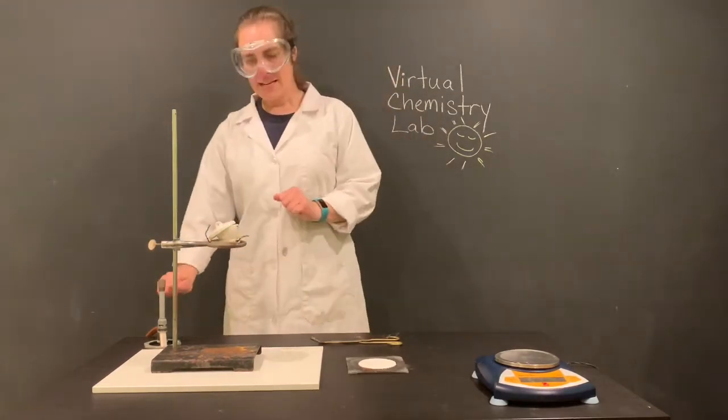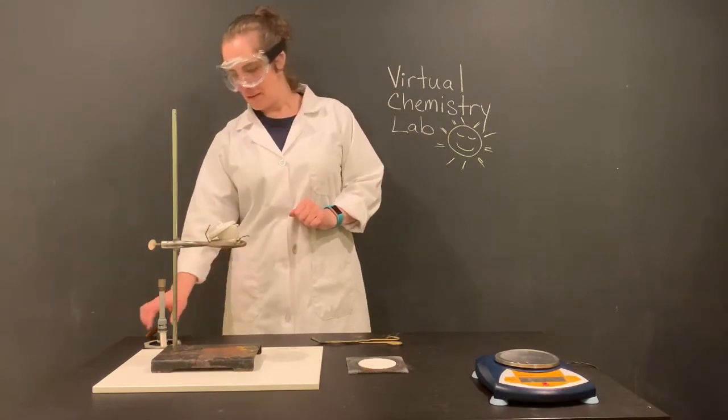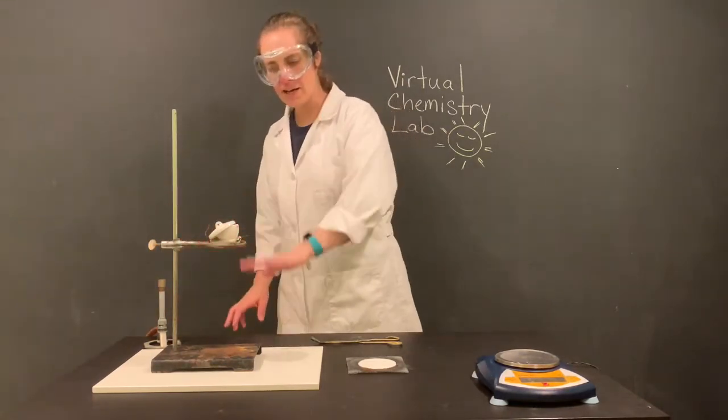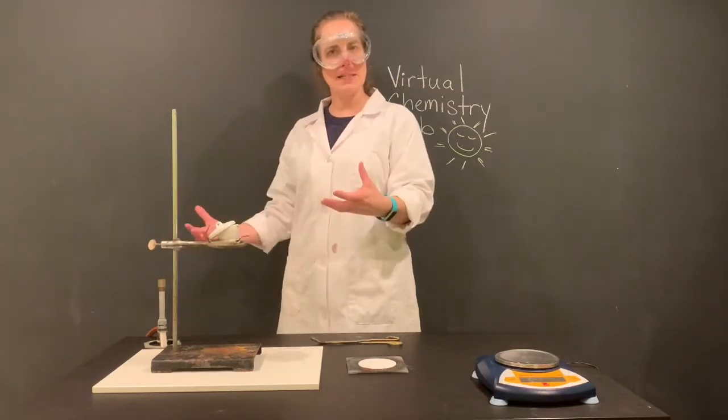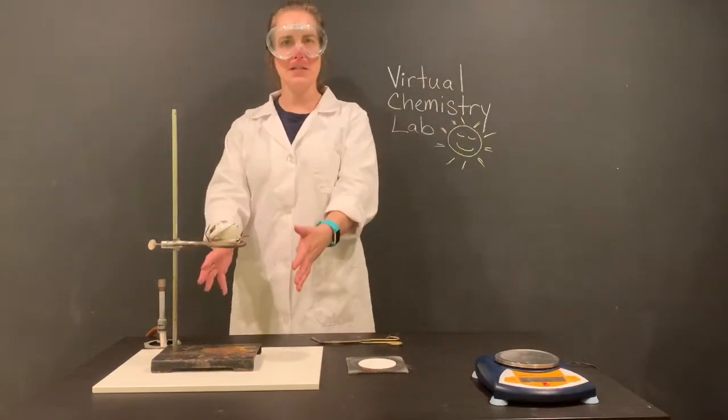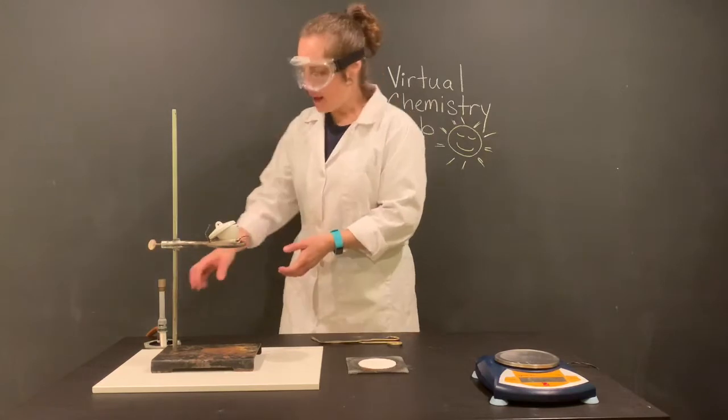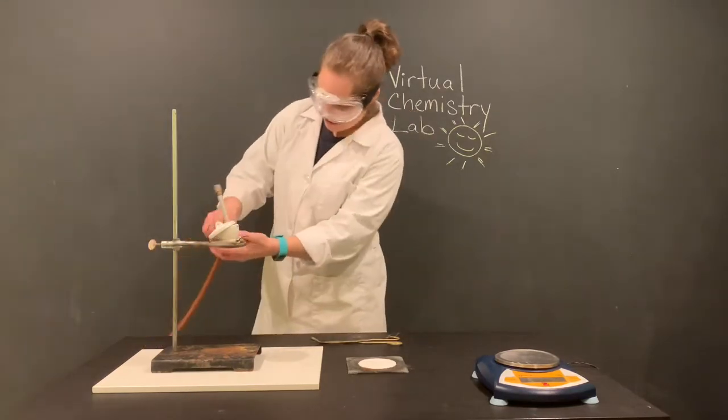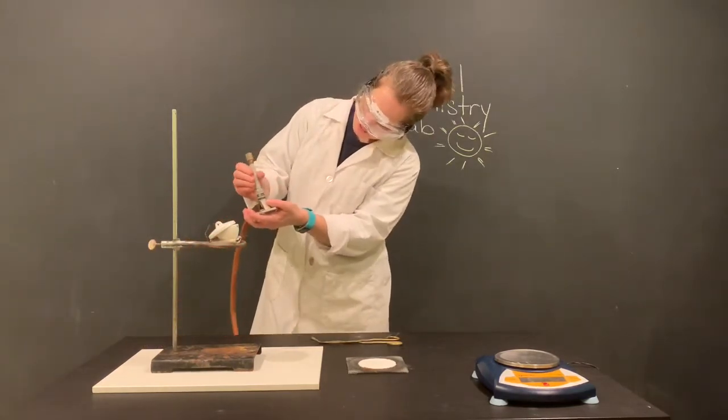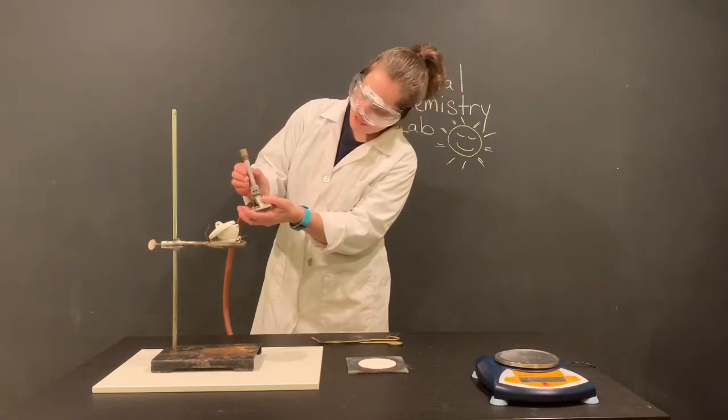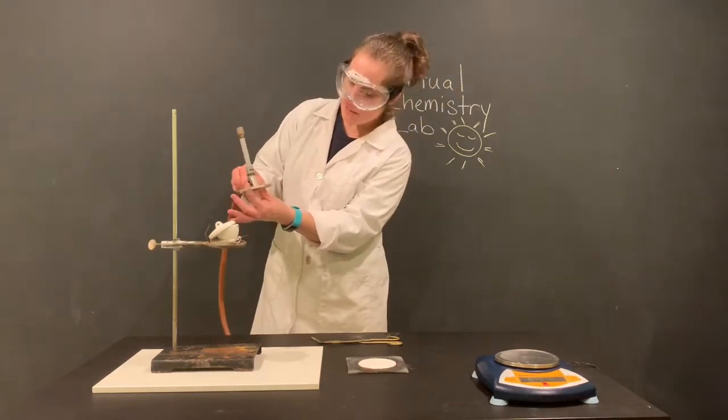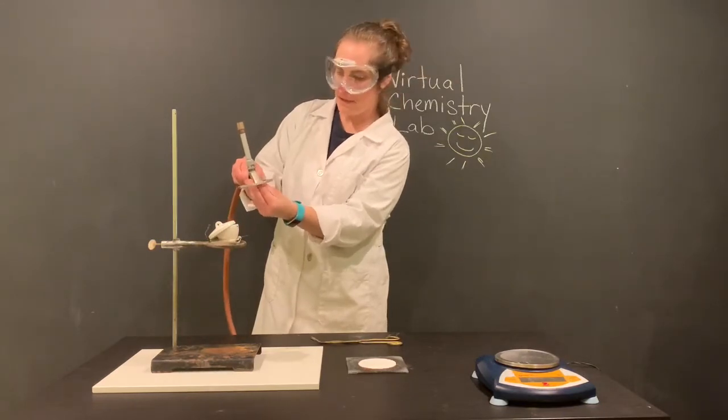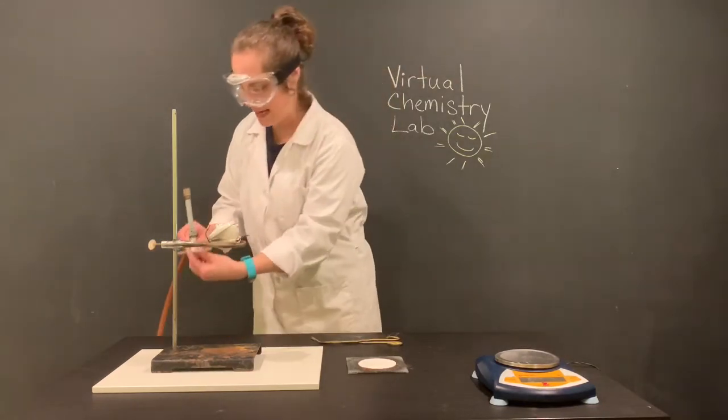Now next thing we want to do is light this Bunsen burner. You notice we're not going to light it underneath here, because we want to be able to get the flame the way we want it before it encounters our experiment. So I'm going to make sure I'm turning my little shaft here to make sure I have good oxygen, plenty of oxygen coming in, but I don't want too much. I'm also going to make sure the nozzle is open so that I'm getting plenty of gas.